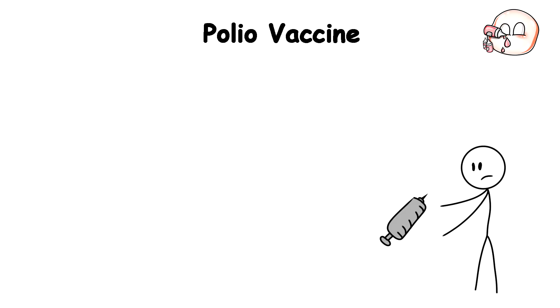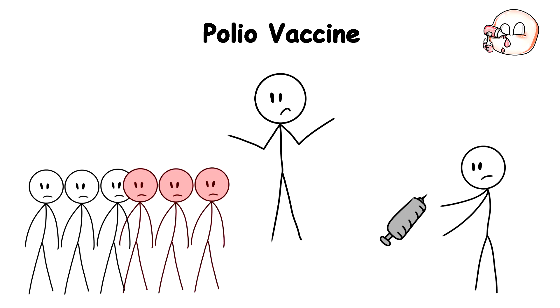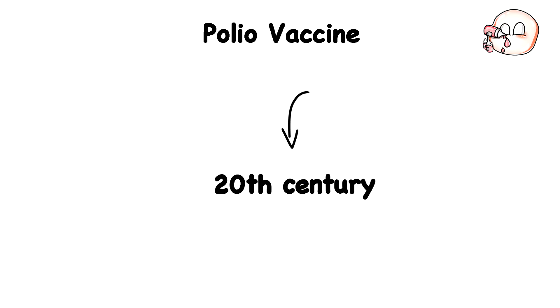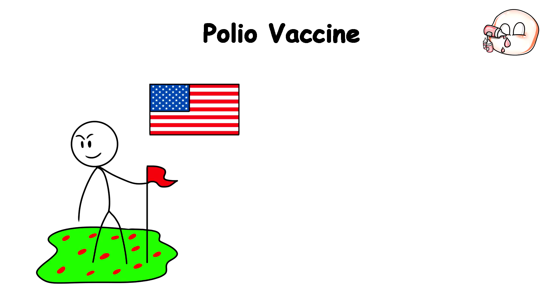Polio Vaccine. You know a vaccine did its job when almost half of the population has no idea why they got it in the first place, and polio is no different. In the early 20th century, the virus was a massive endemic in the United States that could cause children to become disabled.